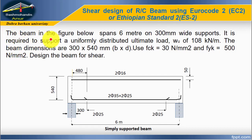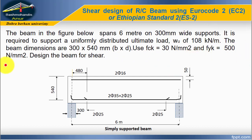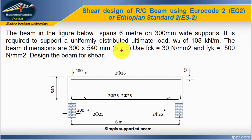The question is: the beam in the figure below spans 6 meters on 300 mm wide supports. It is required to support a uniformly distributed ultimate load of 108 kN per meter. The beam dimensions are 300 by 540 mm, which means the width of the beam is 300 mm and the effective depth of the beam is 540 mm. Use fck = 30 N/mm² and fyk = 500 N/mm². Design the beam for shear.